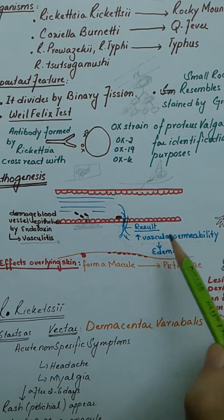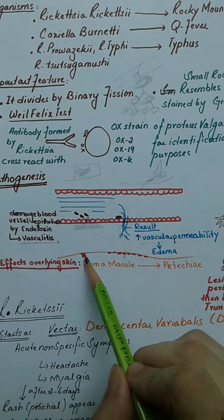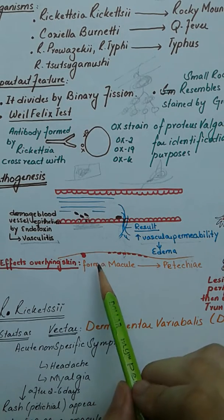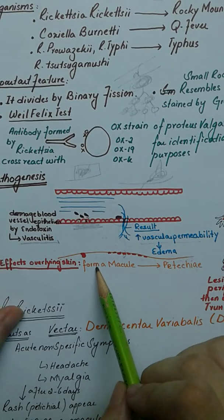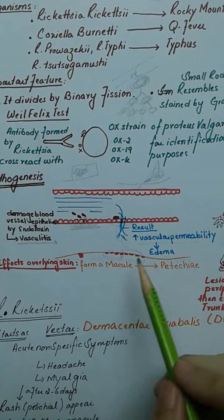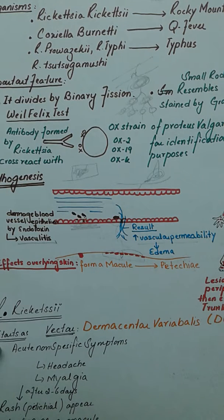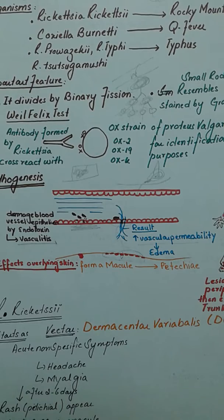On the surface of the skin, initially it forms a macule because underlying inflammation is going on. This macule will later turn into petechiae, which has a bruise-like appearance. This rash has various characteristics: it can start centrally and go peripherally, or peripherally and come centrally, in order to diagnose different types of diseases.